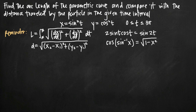Today we're going to be talking about how to find the arc length of a parametric curve. In this particular problem, we've been asked to find the arc length of a parametric curve and also to compare it with the distance traveled by the particle in the given time interval. We've been given the parametric equations x equals sine squared t and y equals cosine squared t, over the interval t from zero to three pi.